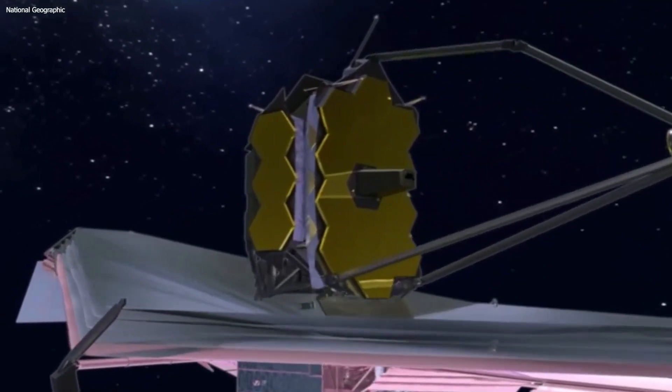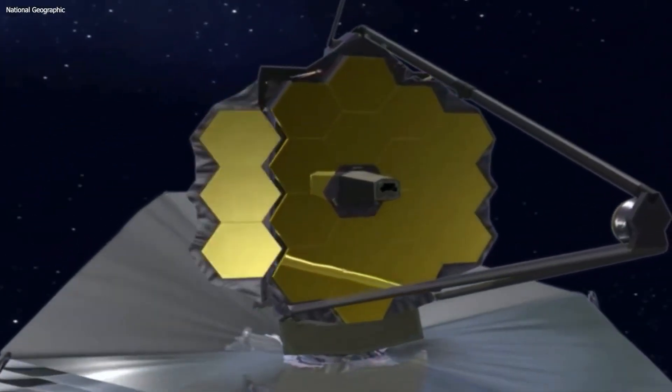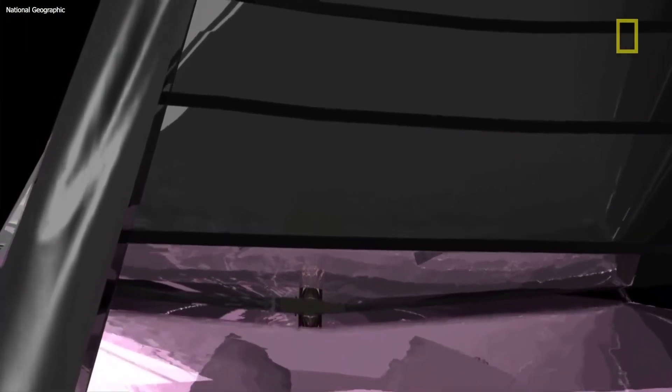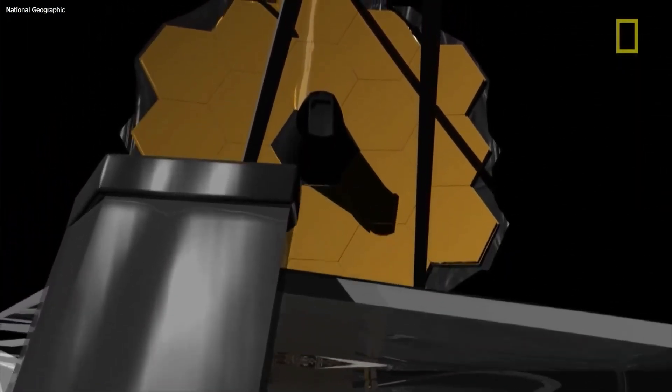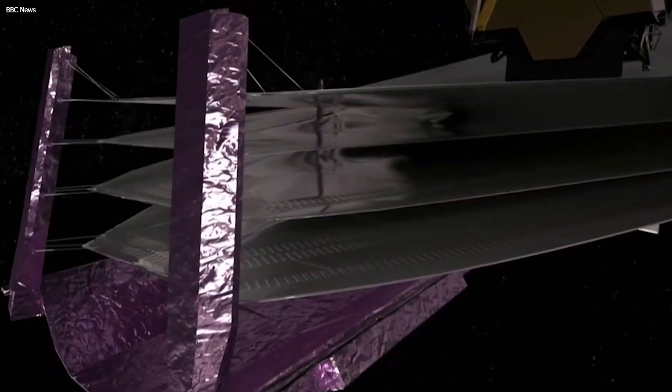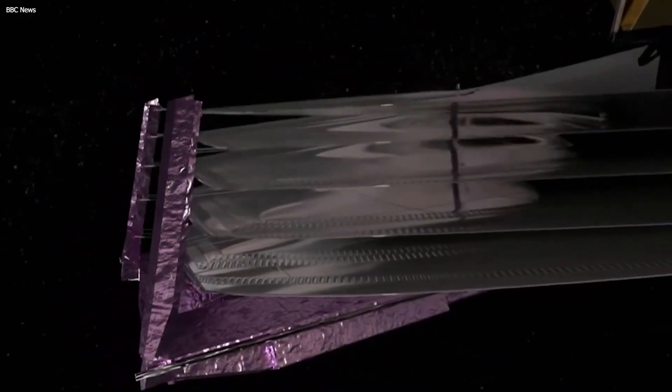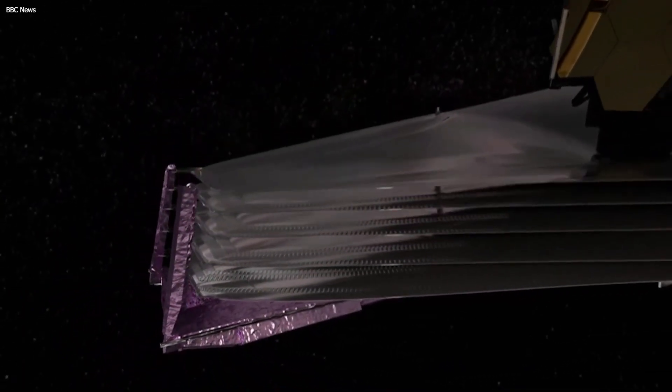Then, on day three of the mission, still inside the spacecraft, two special pallets will be deployed. These pallets will hold Webb's essential sun shields, which are designed to keep the telescope cool and allow it to function properly in space. The deployment of these shields will play a critical role in ensuring that the telescope can operate effectively throughout its mission.